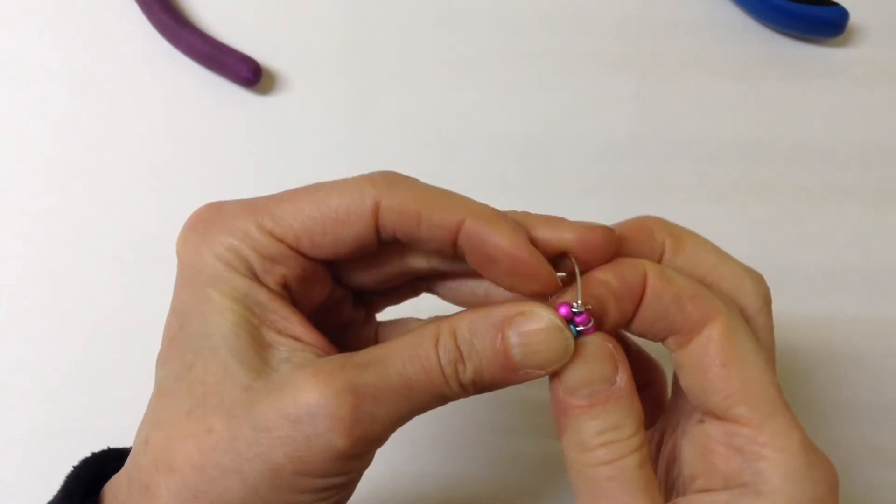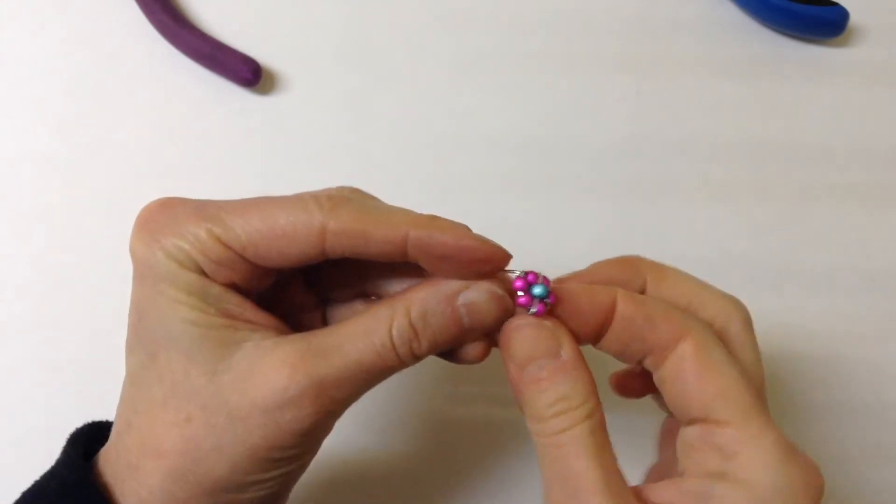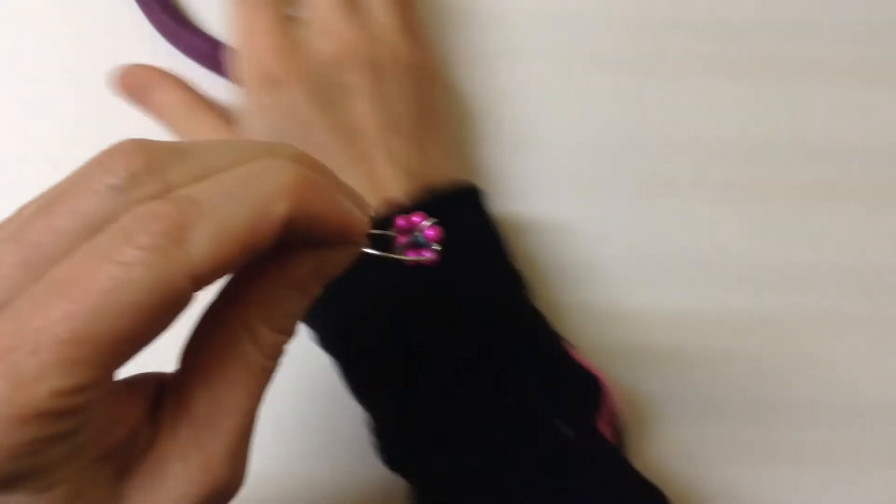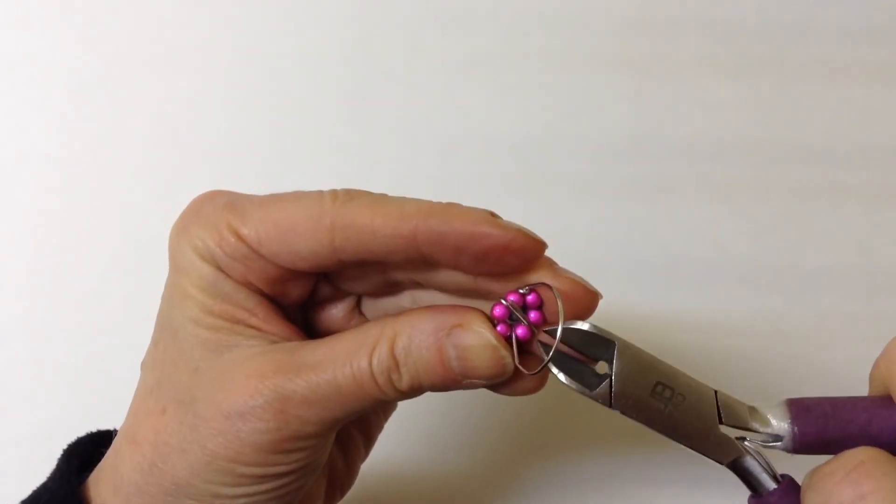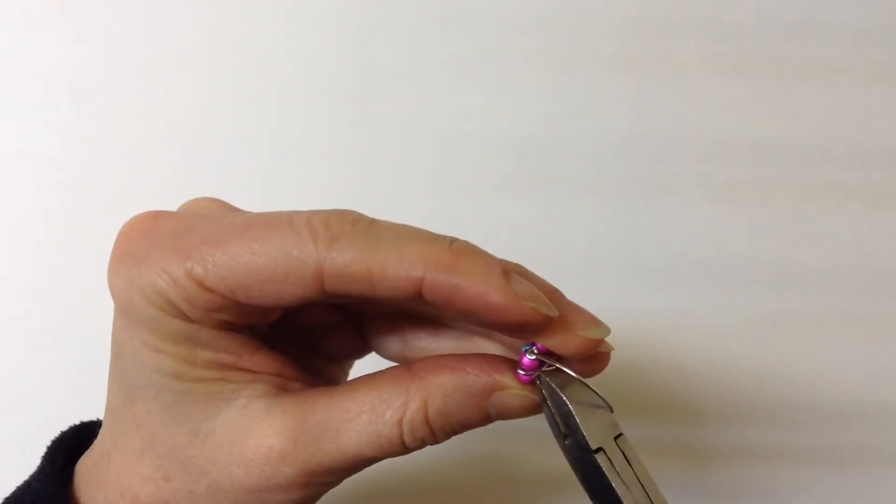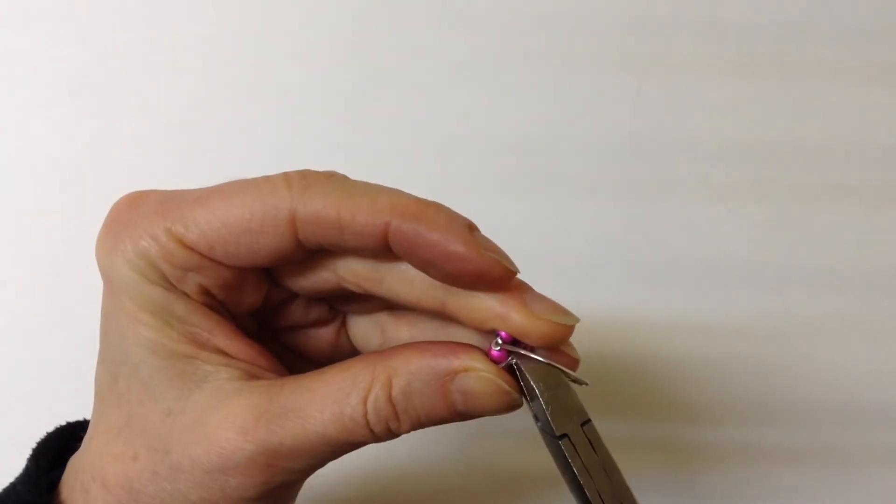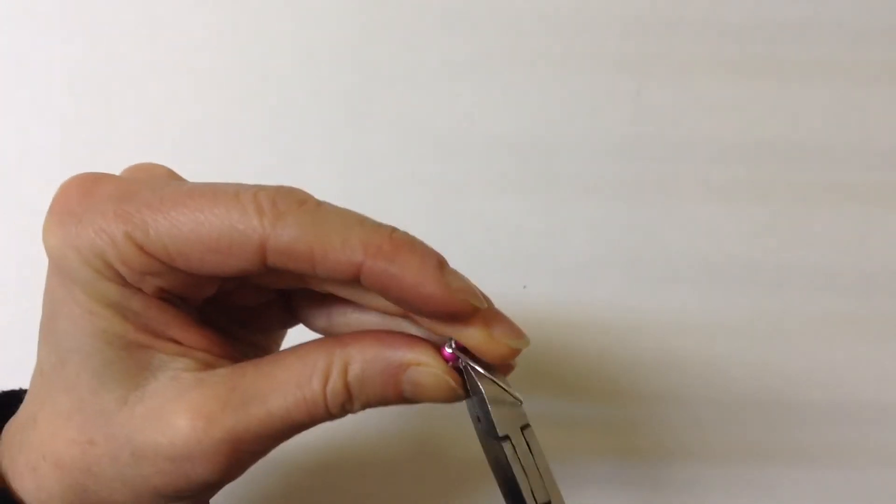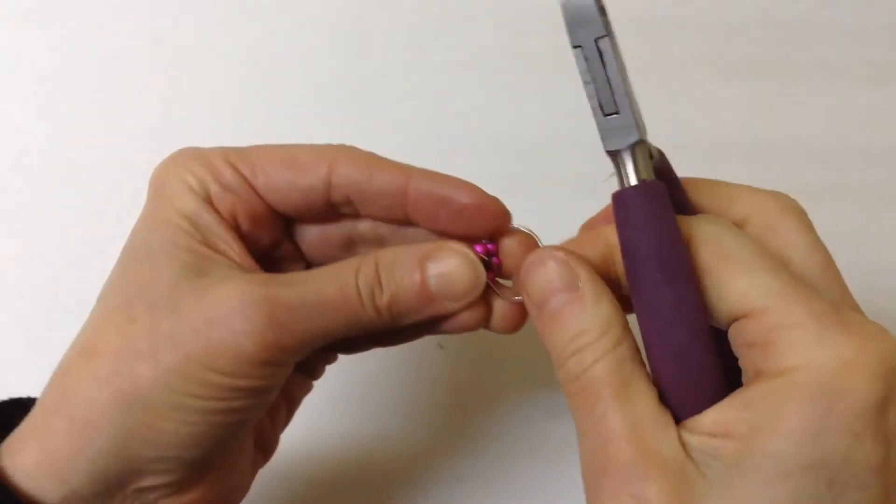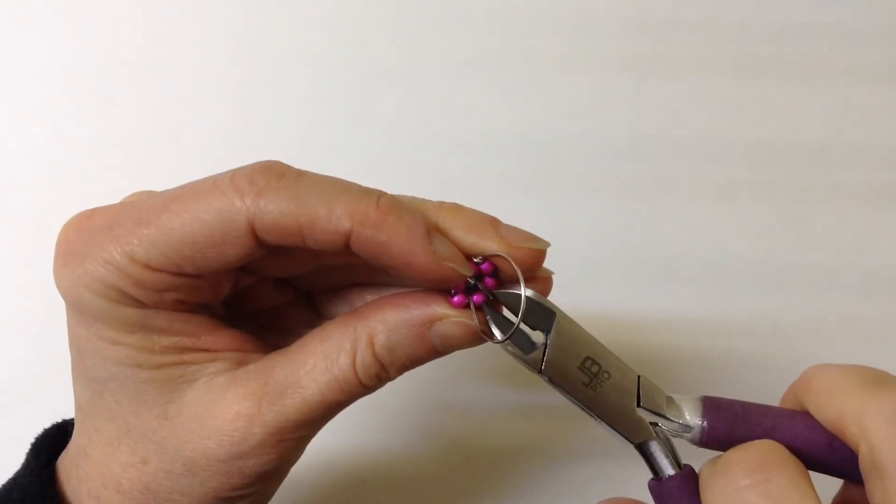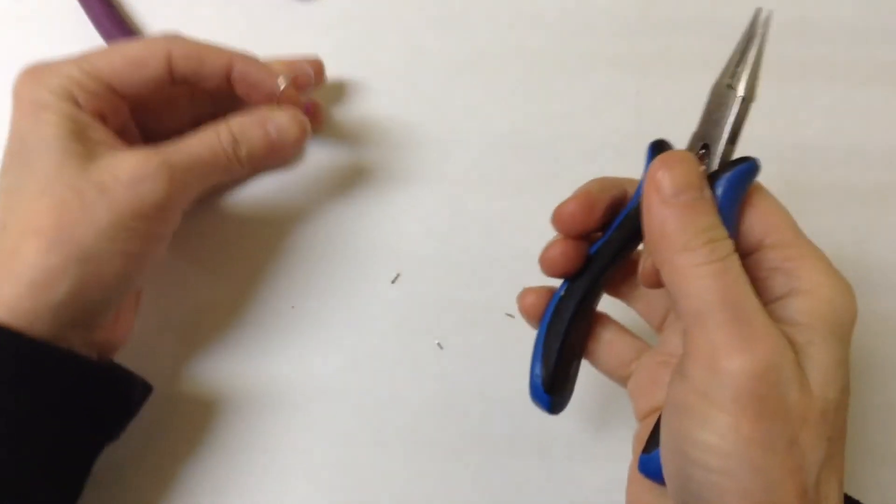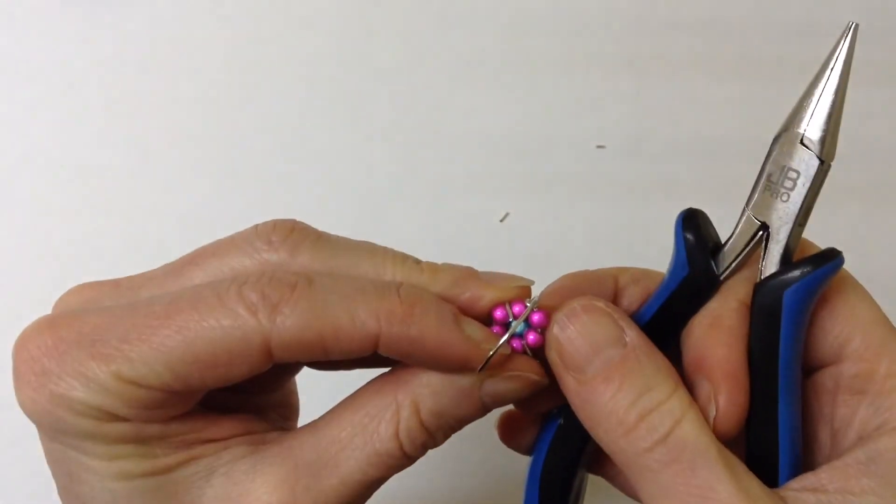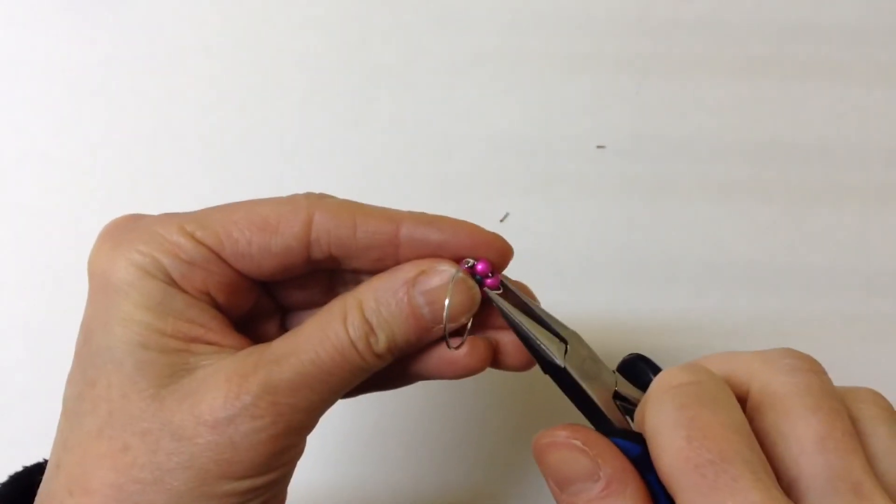Then we're going to push this one to the back so it's centered. Now we'll flip it over and clip the ends. Then with our flat pliers we'll bend the little ends in so they're not pokey.